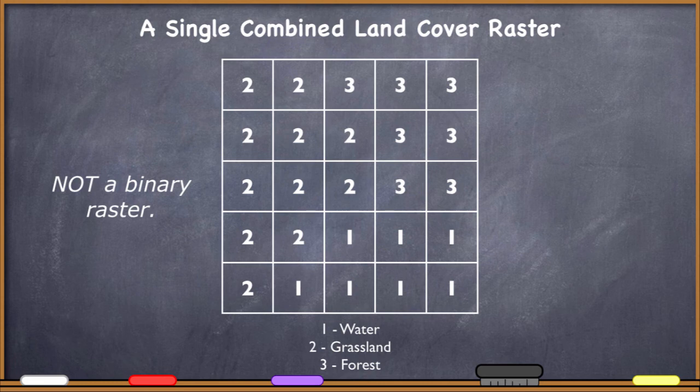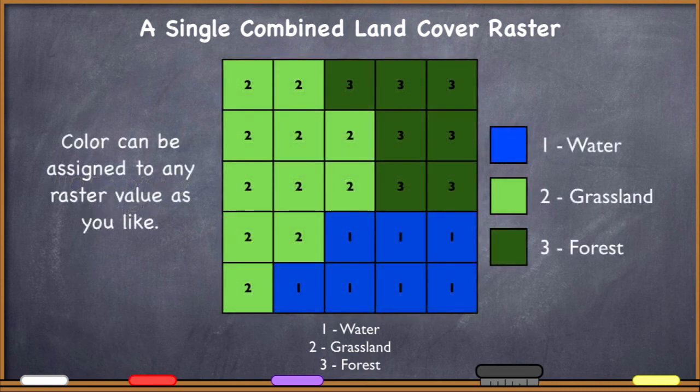So here I just have a qualitative kind of data scheme. One, that's just a label. I'm using that value one to represent water. Of course, two doesn't mean it's twice as much as one in this particular raster, because two is just a label for grassland. Three is just a label for forest.